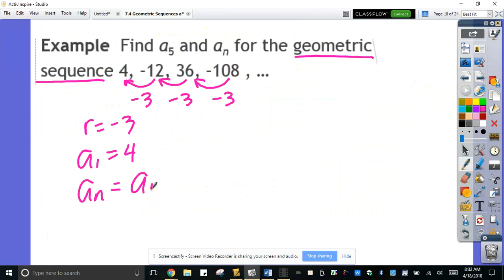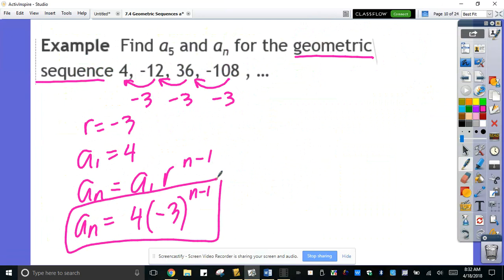So you know the formula is right here. a sub n. First term is 4. The ratio is negative 3 to the n minus 1. And that's the explicit formula. They're being asked to find the a sub n here. Now, what if we try to solve for a sub 5? The fifth term. The fifth term will be a sub 1, which we know is 4.